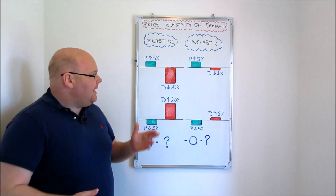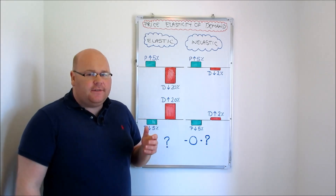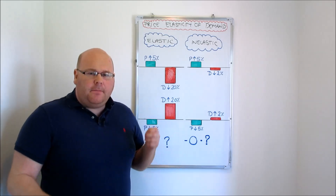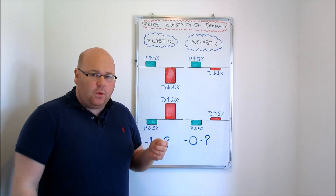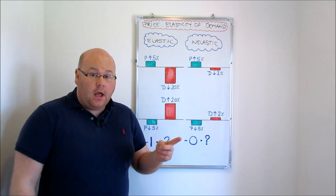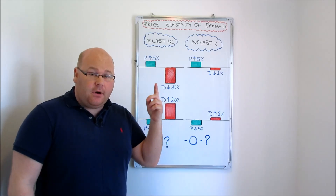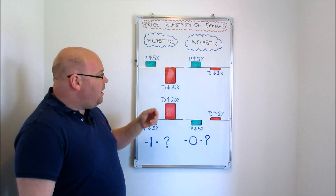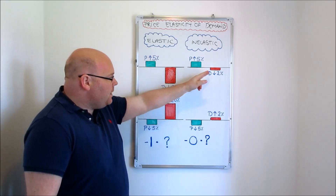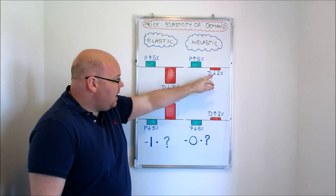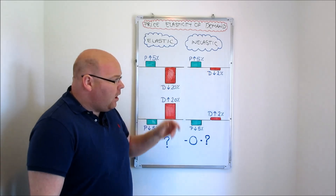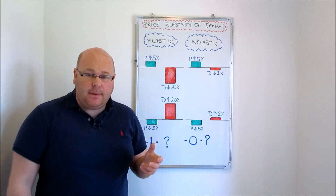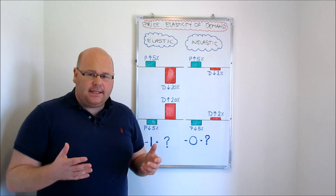Not all products are like that. Imagine we put the price up by just five percent and we lost some customers, but the percentage of customers we lost was lower than the percentage we put our prices up by. For example, putting prices up by five percent and only losing two percent of our customer base — that gives us an inelastic product.